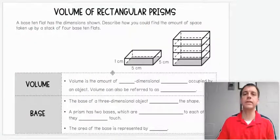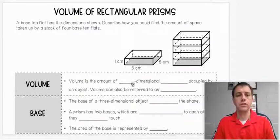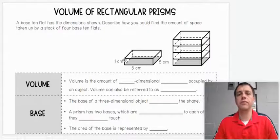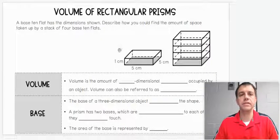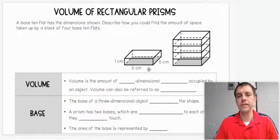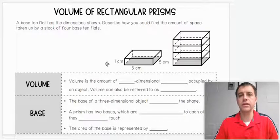Today, we're working on volume of rectangular prisms. We have a picture here of a base 10 flat with the dimensions shown. It's five centimeters at its base, five centimeters at its width, and one centimeter tall.